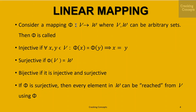Consider a mapping phi from vector set V to vector set W, where V and W are arbitrary sets. Then phi is called injective if for all vectors x and y belonging to V, phi of x equal to phi of y implies x is equal to y. Surjective if phi of V gives the vector set W, meaning every element in W can be reached from V using phi.